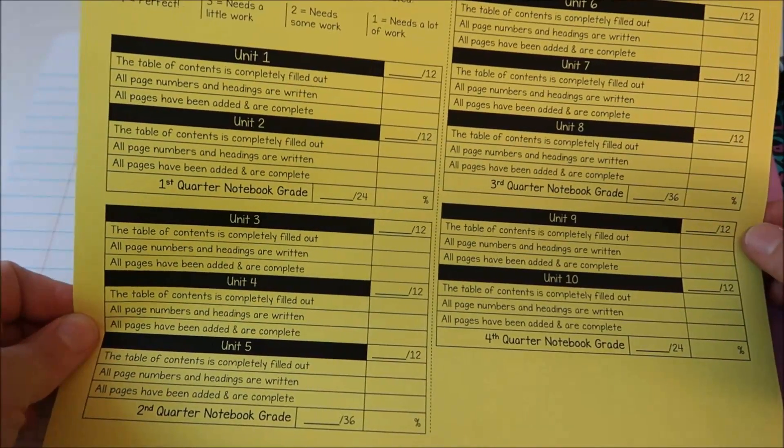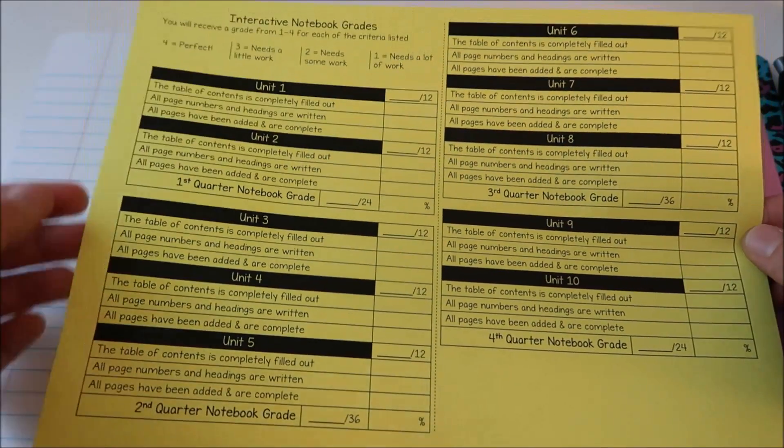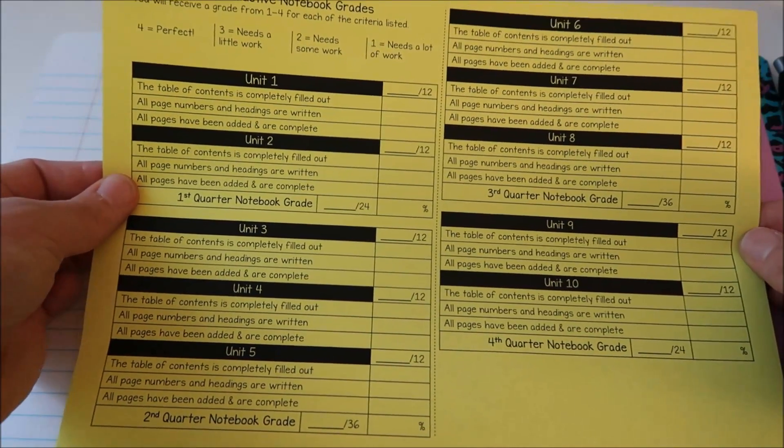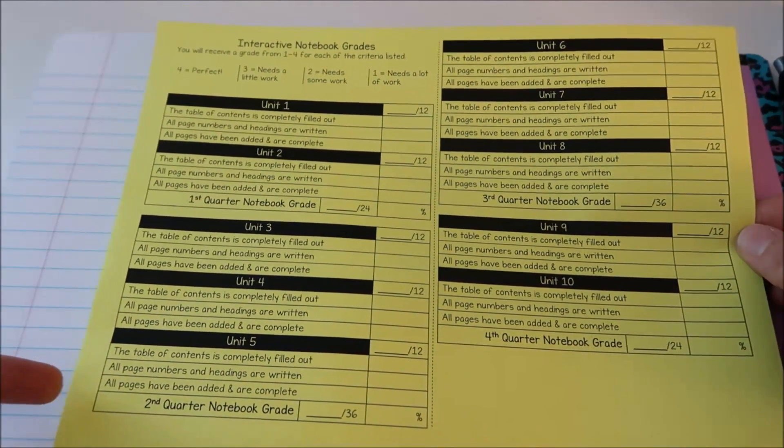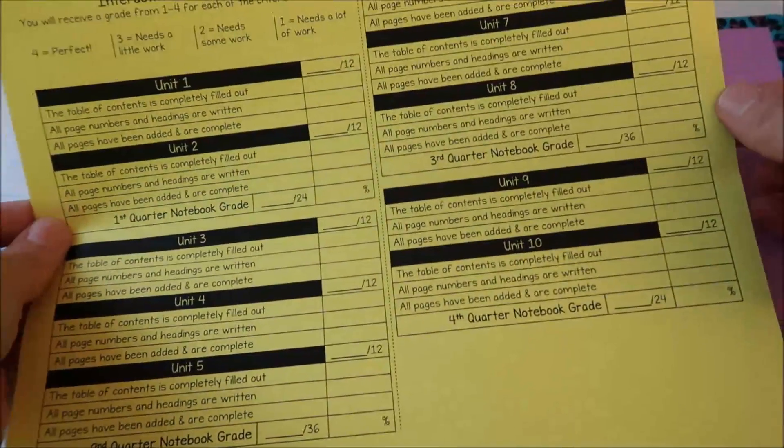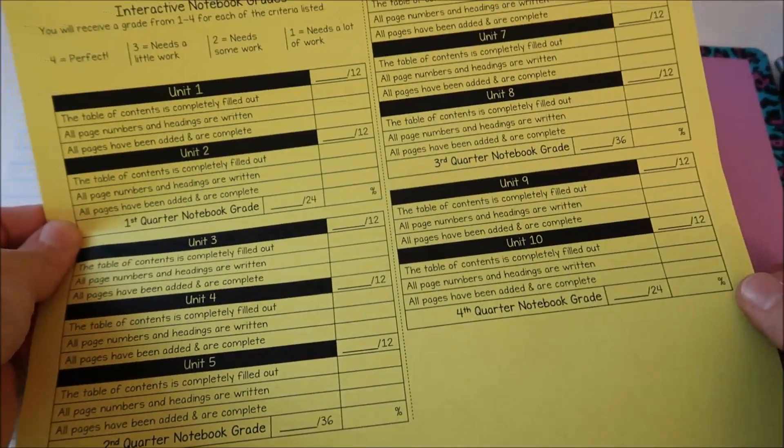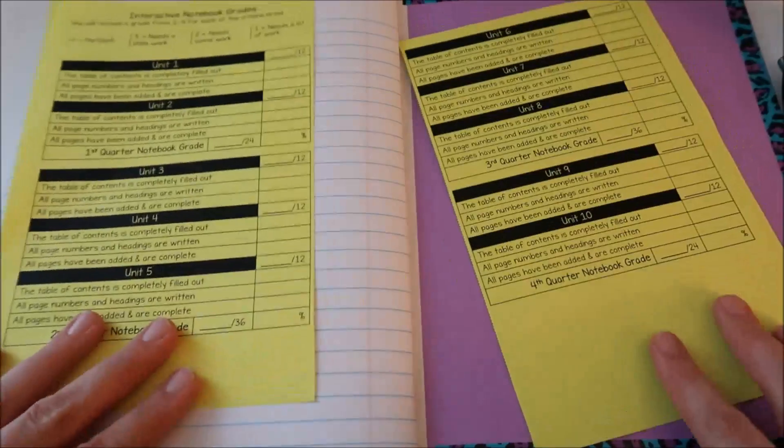So I have this broken down as best as I could figure that the units are going to fit into the marking periods. I will definitely get through the first two units in the first quarter and then I have units three through five in the second quarter, six through eight in the third quarter and then units nine and ten in the fourth quarter.